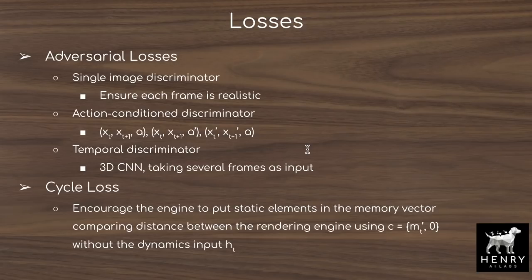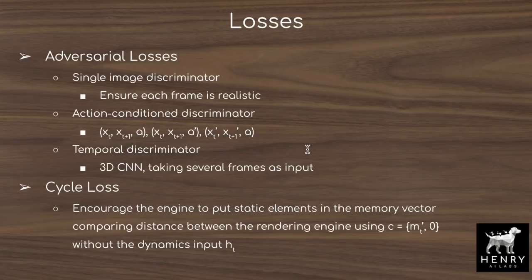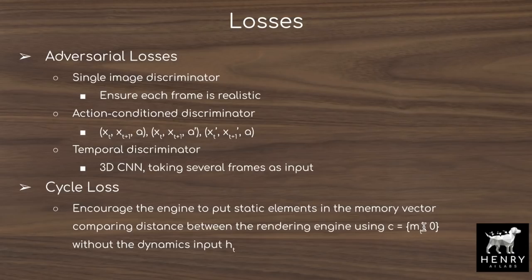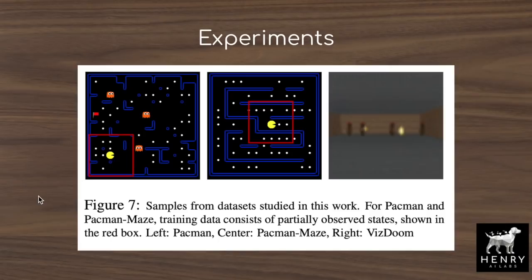The third adversarial loss is the temporal discriminator, which ensures sequences of frames have long-term modeling — though this is primarily enforced by the memory bank. It uses a 3D convolution that also looks at the time axis: stacking frames of 84 by 84 by 3, the 3D convolution (typically 3 by 3 by 3) slides through them, capturing time information, and a hierarchy of convolutions aggregates the entire timescale from these local time features. The fourth loss is the cycle loss, which encourages the engine to put static background elements in the memory vector by comparing what the rendering engine produces with only a corrupted memory vector and no hidden state versus what it produces with the full input.